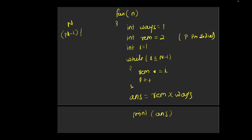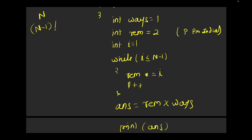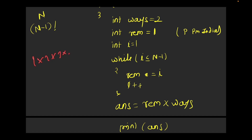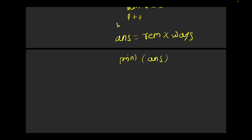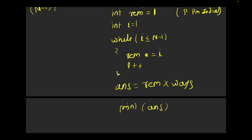One correction: 'ways' should be initialized to 2, and 'remaining' should be initialized to 1. This way, the loop computes 1 × 2 × 3 × 4... which gives us (n-1) factorial, and then I multiply it by 'ways' (which is 2) for the President and Prime Minister arrangement.